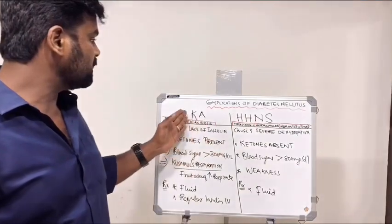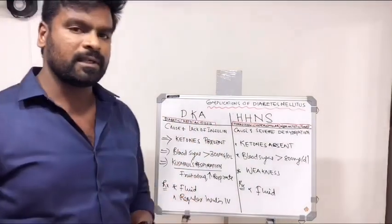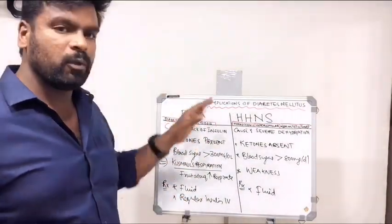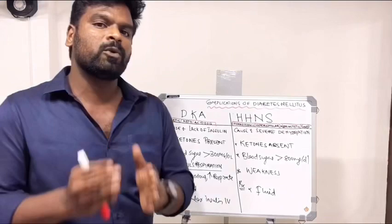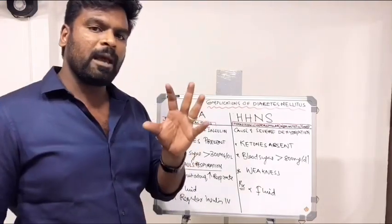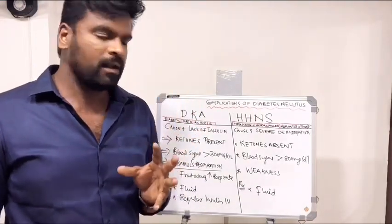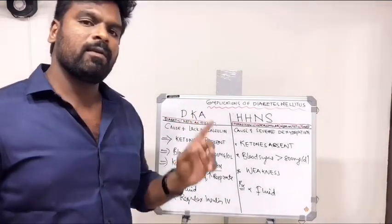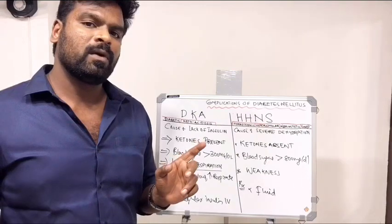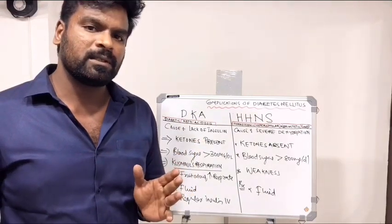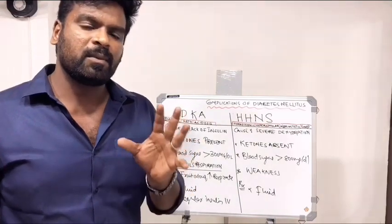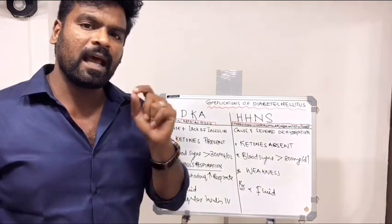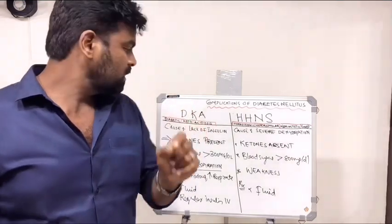So let me discuss first what is DKA. From the name itself, DKA can be split into two parts. Diabetes means uncontrolled sugar level. Uncontrolled sugar level can lead to production of ketone bodies which makes the body acidic. That is called diabetic ketoacidosis.